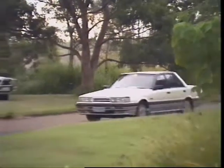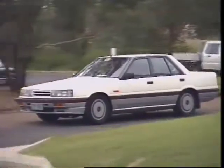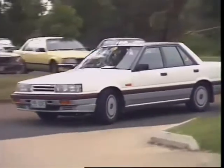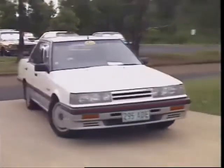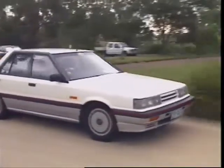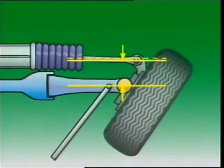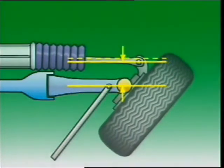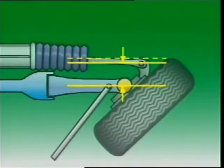A disadvantage of a fixed ratio system is that towards the lock positions, more effort is needed by the driver. This is because the angle of the steering arms reduces their effective length, and that reduces the leverage on the wheels.